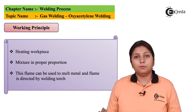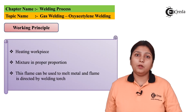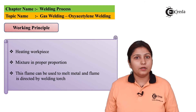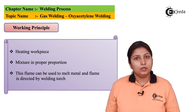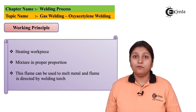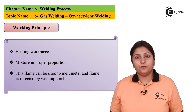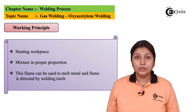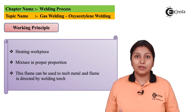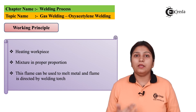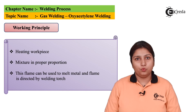In oxyacetylene welding, the mixture uses a proper proportion of gases. As stated, the mixture depends upon the type of flame taking place — like carburizing, reducing, or oxidizing. This flame generates heat which is used directly to melt the metal and make the weld pool.